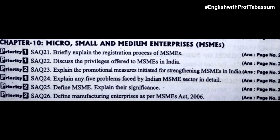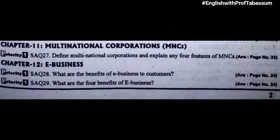Chapter 10, micro, small and medium enterprises: briefly explain the registration process of MSMEs; discuss the privileges offered to MSMEs in India; explain the promotional measures initiated for strengthening MSMEs in India; explain any five problems faced by Indian MSME sector in detail; define MSME and explain their significance; define manufacturing enterprises as per MSME's Act 2006. Chapter 11, multinational corporations: define multinational corporations and explain any four features of MNCs. Chapter 12, e-business: what are the benefits of e-business to customers; what are the four benefits of e-business.